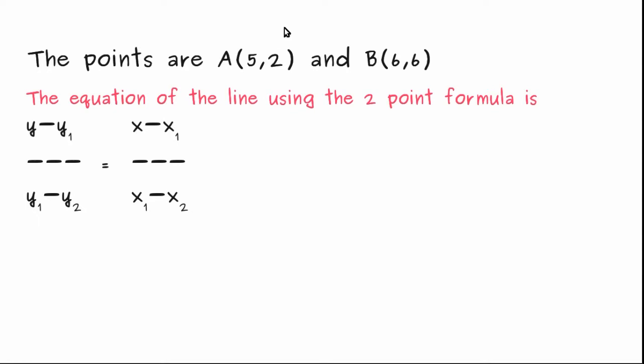Points 5 and 2 are x1, y1 and 6,6 are x2 and y2 respectively. So we just have to use this equation and substitute the values in here. For example, for y1, I am going to substitute 2 and for y2, I am going to substitute 6.